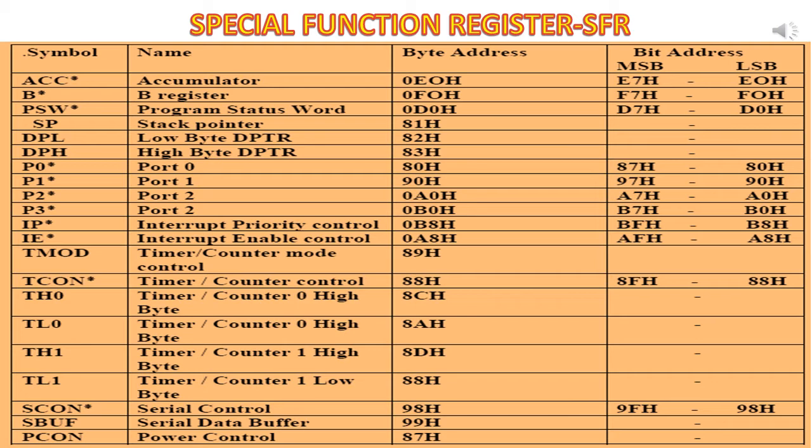The A register is also called as the accumulator, and B is the B register. These two registers are used to perform arithmetic and logical operations inside the microcontroller 8051.